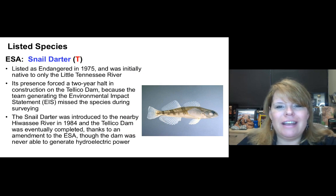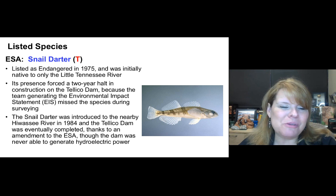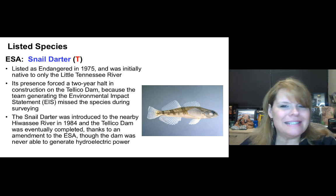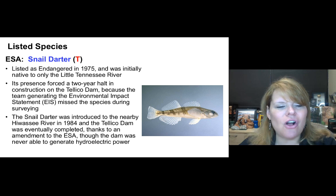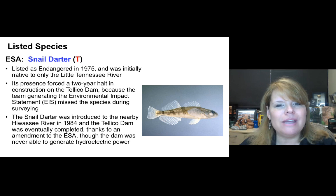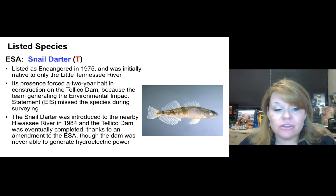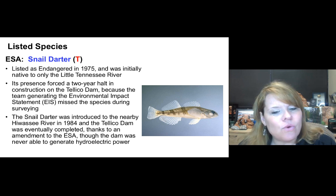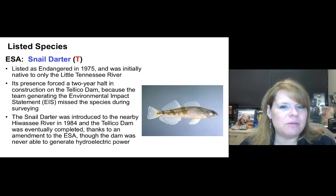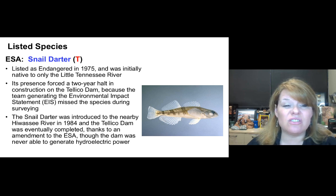The snail darter is listed as Threatened under the Endangered Species Act — you can't talk about endangered species without mentioning this one. Listed in 1975, it was initially native only to the Little Tennessee River. Its presence forced a two-year halt in construction of the Tellico Dam because the team generating the Environmental Impact Statement (EIS) missed the species during survey. The snail darter was introduced to the nearby Hiwassee River in 1984, and the Tellico Dam was eventually completed, though no hydroelectric power was ever generated there.